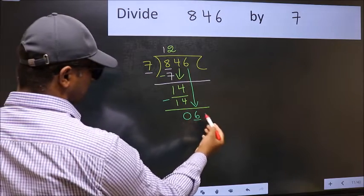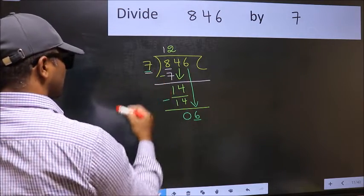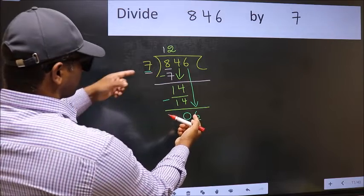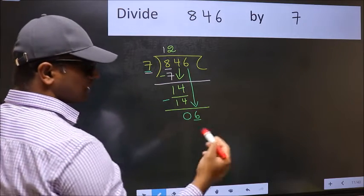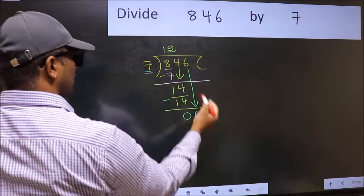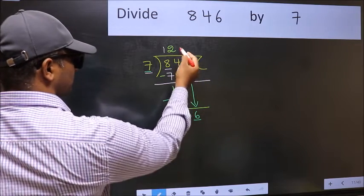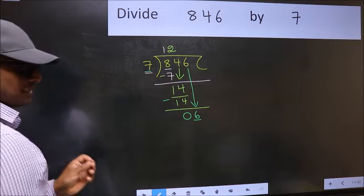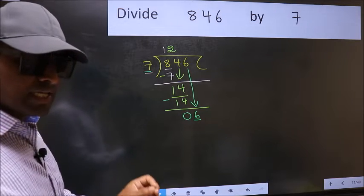Here we have 6, and here 7. 6 is smaller than 7. So what many do is, they directly put dot and take 0. Which is wrong.